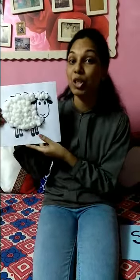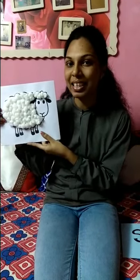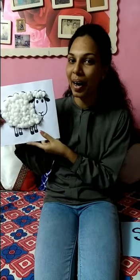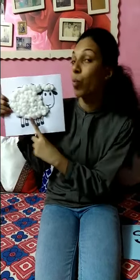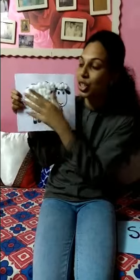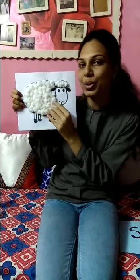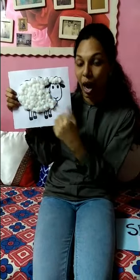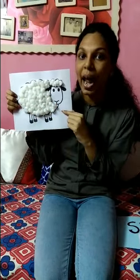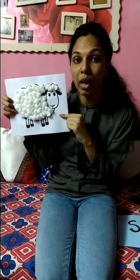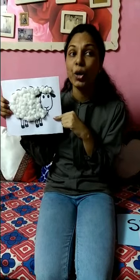Now children, let's learn something more about the sheep. I am a sheep and my name is Baba. I am white in color and soft to touch. I am full of fur and people use my wool to make clothes.